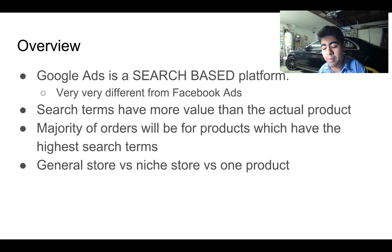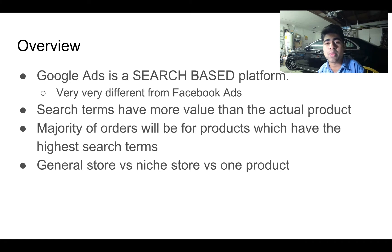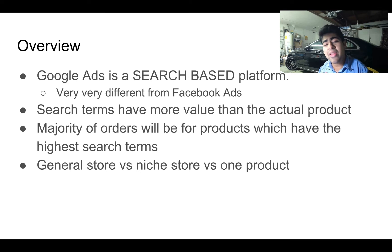So if people are searching more for a wireless printer than for a kitchen gadget you found on Facebook, the wireless printer is going to sell much more if you compete well — based on product images, description, etc. When it comes to store type: general store versus niche store versus one-product store, the main thing you need to focus on for Google Ads campaigns is a general store. If you already run a general store, it's much better for you. One-product stores will have a hard time unless a lot of people are searching for that specific product.